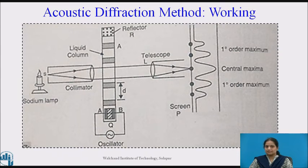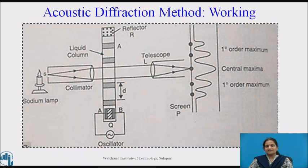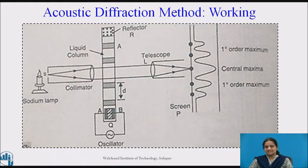The two waves combine to form stationary waves in the liquid column. The density and hence the refractive index of the liquid is maximum at nodal points and minimum at antinodal points. Therefore, the nodal points act as opaque regions while antinodal areas act as transparent regions for light. The liquid column thus resembles a ruled grating and causes diffraction of light. The image formed on the screen consists of a diffraction pattern having a central maximum flanked by first order, second order maxima and minima, and so on.